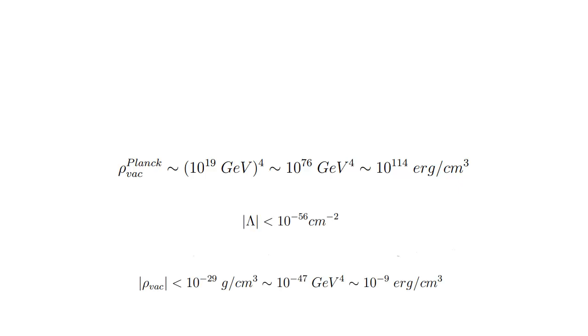the result is 120 orders of magnitude higher than the observation cosmological constraint of dark energy as the energy of the vacuum, leading to the vacuum catastrophe problem in theoretical physics.